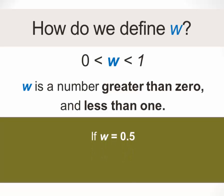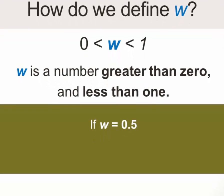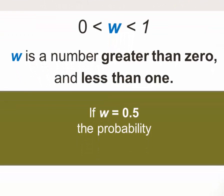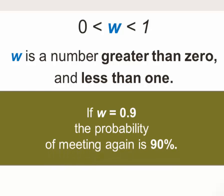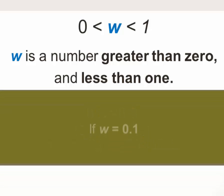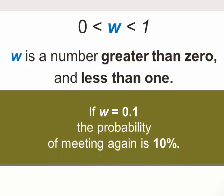To illustrate what we mean by this, if W equals 0.5, this means that the probability of the two actors meeting again is 50%. And if W were equal to 0.9, this would mean that the probability of the actors meeting again is 90%, so it's very high. And if W is equal to 0.1, then the probability of the actors meeting again is only 10%.